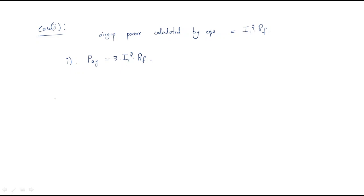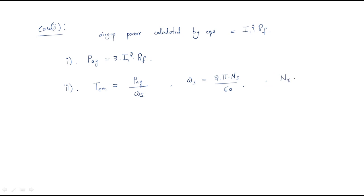The second rotor parameter is the electromagnetic torque, Tem. Tem equals the air gap power divided by the synchronous angular speed ωs, where ωs = 2πNs/60. The rotor speed Nr equals the synchronous speed Ns times (1 minus s).